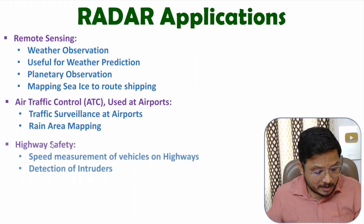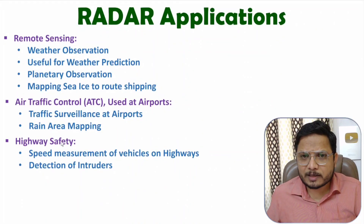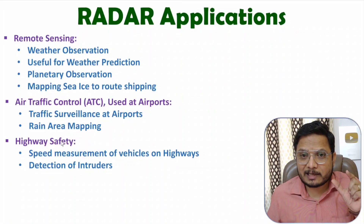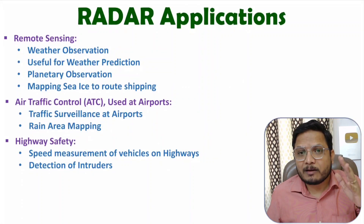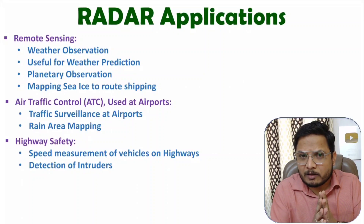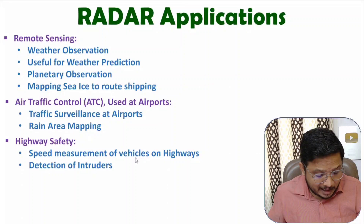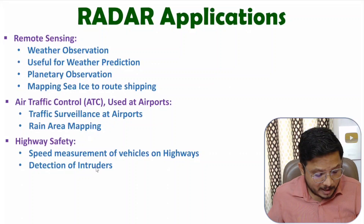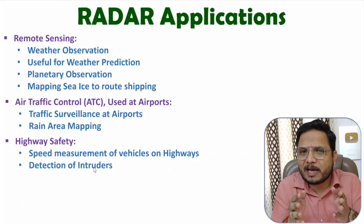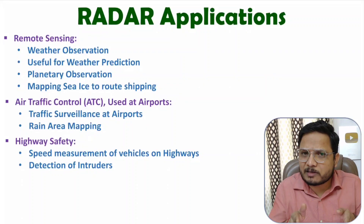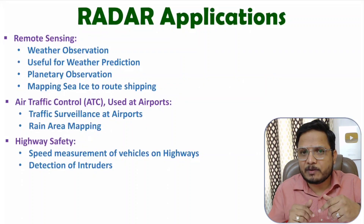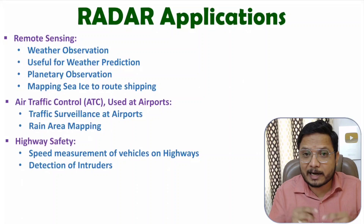The next application is highway safety. Usually in the USA this application is very popular, where with the use of radar, speed measurement of vehicles is done. If somebody is not following the rules, the penalty amount is directly deducted from their bank account based on the rules. Speed measurement as well as detection of intruders can be done with radar on highways, where there should be no intruder — if some intruders are entering the highway, that can also be detected.